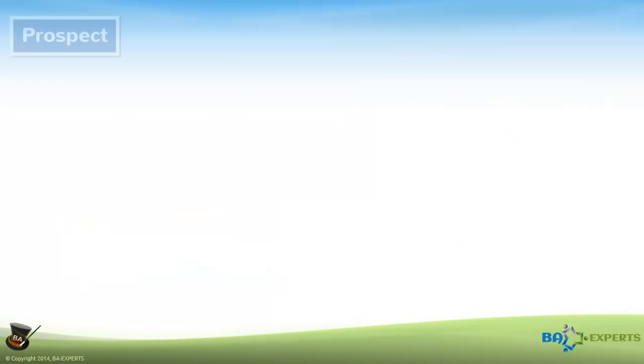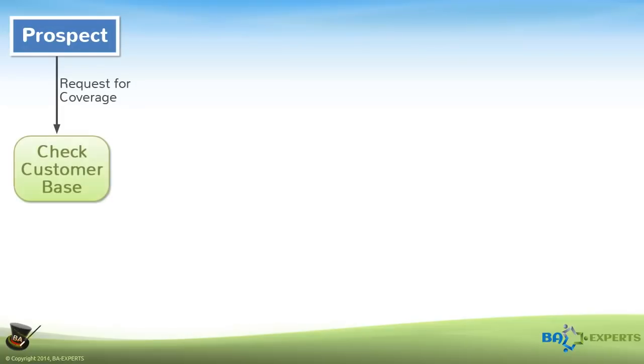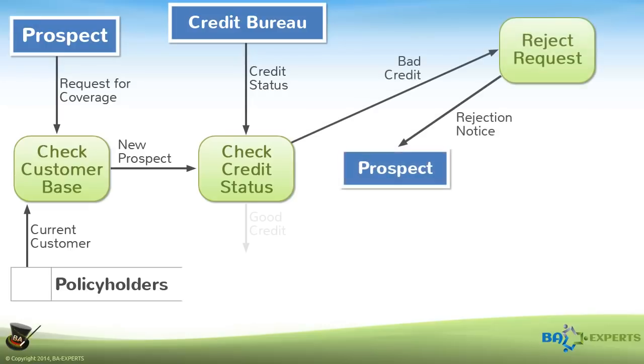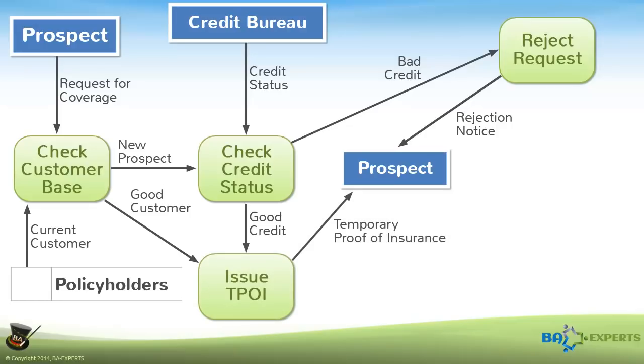In the future, a prospect will submit an application via our website. If the prospect doesn't have a policy with us, the site will request a credit check web service and either reject or approve the application directly. If the request is from one of our current customers in good standing or approved via the credit check, the site will provide a temporary proof of insurance certificate that the prospect can print out and use to register his or her vehicle.